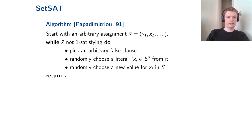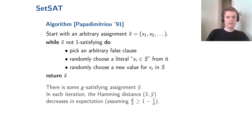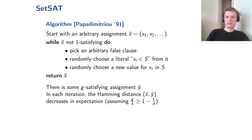This may seem naive — we're just randomly changing the assignment until satisfied — but it works and finishes in expected polynomial time. The argument is: we know there is some g-satisfying assignment y (promised, though unknown). We track the Hamming distance between our current assignment and y, computing the probability that this distance increases or decreases. When g/k is above the threshold, the Hamming distance decreases in expectation. When g/k is exactly at the threshold, the change is expected to be zero — an unbiased random walk — so it reaches zero in quadratic expected time.